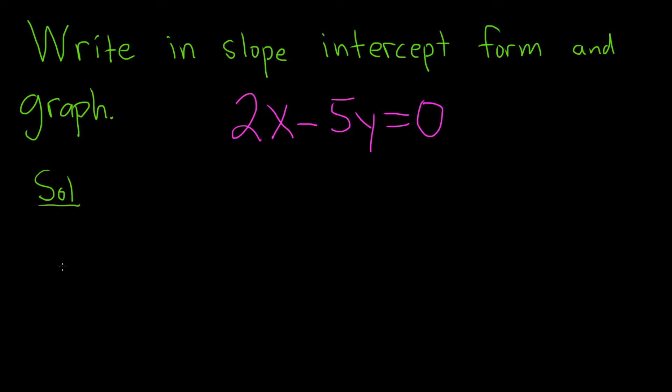The slope-intercept form is y equals mx plus b. Our goal is to write it this way and then use m, which is the slope, and b, which is the y-intercept, to graph this line.